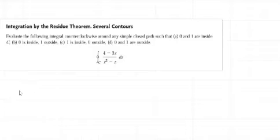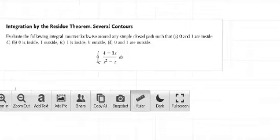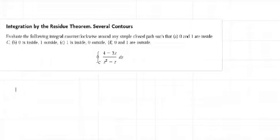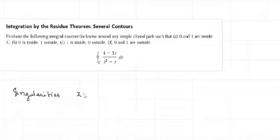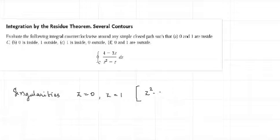Before moving to parts A, B, C, D, we can find the singularities for the function. The singularities are Z = 0 and Z = 1. We get these by setting the denominator Z² − Z = 0, which implies Z(Z − 1) = 0, giving Z = 0 and Z = 1.